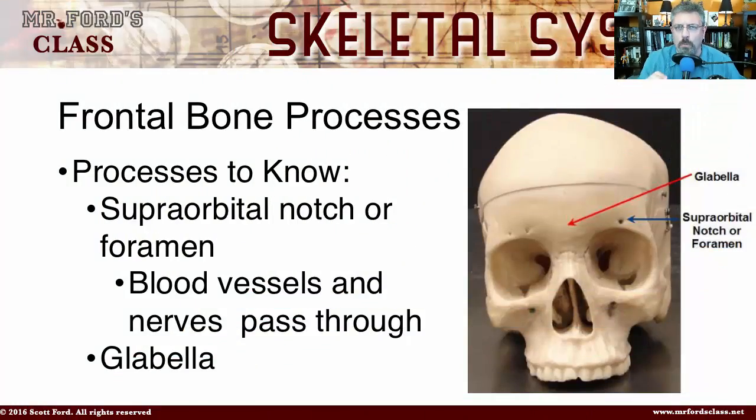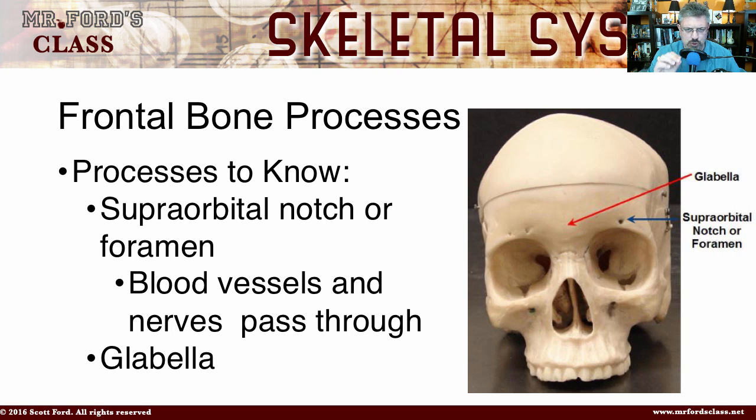So there's my little warning as far as the bumps, lumps, grooves, and all that fun stuff. On the frontal bone, there are two big processes you need to be aware of. The first one is the supraorbital notch. Look at the word: 'supra' means above, 'orbital' refers to the orbits, and 'notch' is a groove or indentation.